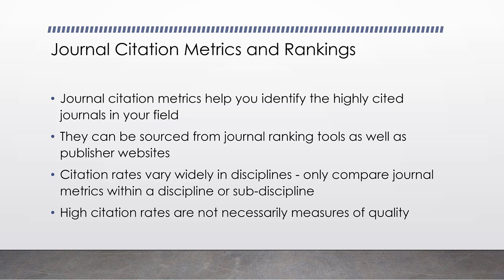These journal citation metrics come from many different sources. There are third-party journal ranking tools that try to provide a more objective measure of how well journals reach their audience, and there are also tools created by the publishers themselves — Wiley, Pearson, Taylor Francis — who have created their own types of metrics and rankings. It's important to understand what the metrics mean and how those numbers should be interpreted. Citation rates vary widely by discipline, so you should only be comparing journal metrics within your discipline or sub-discipline.